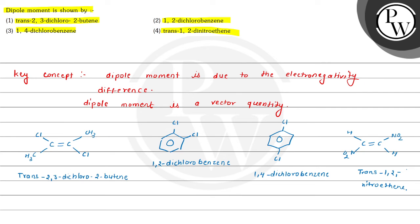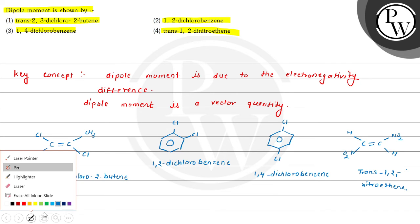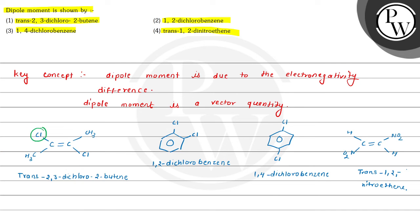Now we can see that in trans-2,3-dichloro-2-butene, both chlorine atoms are attached in opposite directions, so they cancel out their dipole moments and the net dipole moment equals zero. However, in 1,2-dichlorobenzene, the chlorine atoms do not cancel each other out because the net dipole moment acts in one direction — so the dipole moment does not equal zero, meaning there is some value.